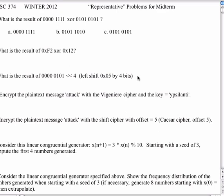Can I do number six? Okay, consider the, and I'm not sure how much detail you want me to go into, so if I'm going into too much detail or not enough, you have to tell me. Number six says, consider this linear congruential generator, starting with the seed of three, compute the first four numbers generated.